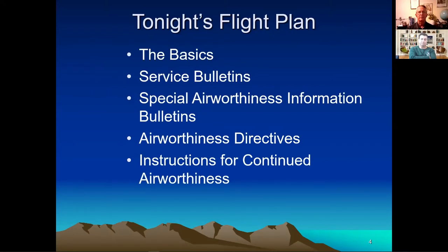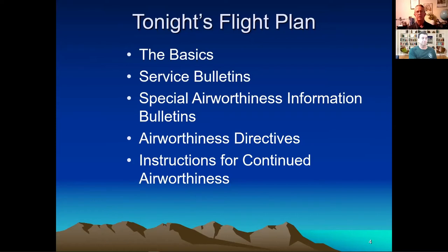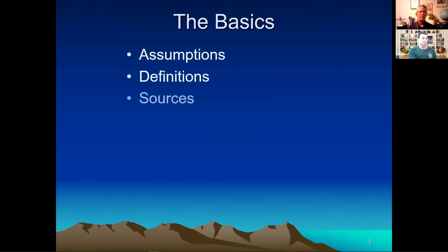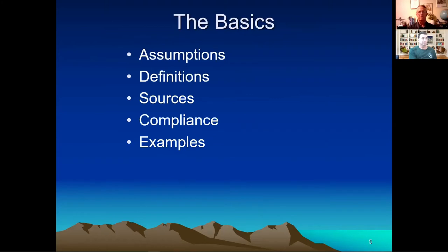Here's our flight plan for tonight. We'll cover some basics on these documents. The ones I chose to cover — to keep content manageable — are service bulletins, airworthiness directives, and instructions for continued airworthiness. There's also a fourth one that squeezes in the middle called special airworthiness information bulletins, an SAIB. These are all important documents we need to be familiar with when working on or flying our airplanes. We'll go through definitions, sources, compliance, and then some interesting examples.